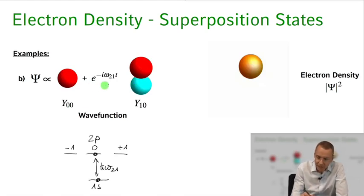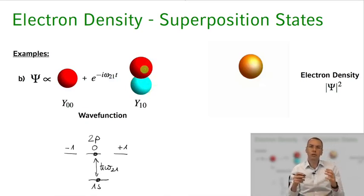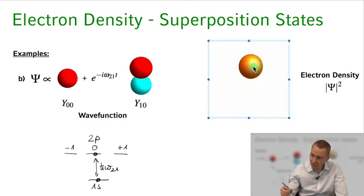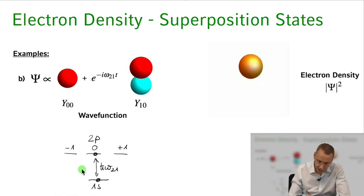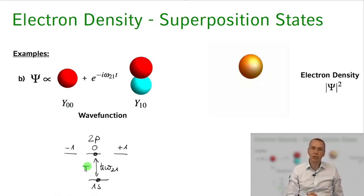As time progresses, the phase evolution flips the sign of the pz orbital. When omega 2,1 times t equals pi, what was positive becomes negative and vice versa — so now we have constructive interference at the bottom and destructive interference at the top. Animating this, we see the electron cloud distribution oscillates up and down, as expected. This corresponds to our classical intuition: it's as if we excited the system with linearly polarized pi light driving the electron cloud up and down.